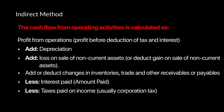Under the indirect method, which is an easier way to apply, we'll take the profit from operations figure that comes from the income statement and adjust this figure for all non-cash items — or those items that have to be removed — to find cash flow from operations. We'll just adjust this figure.